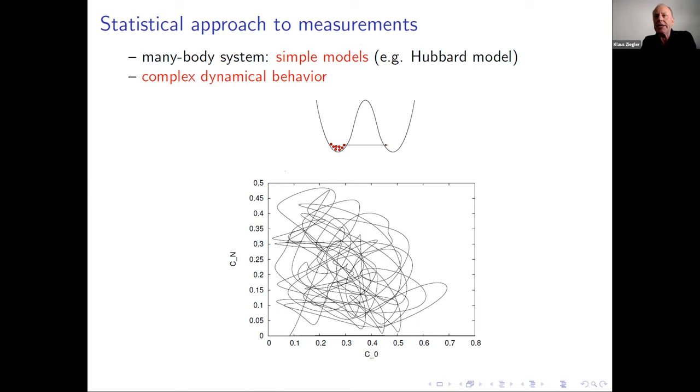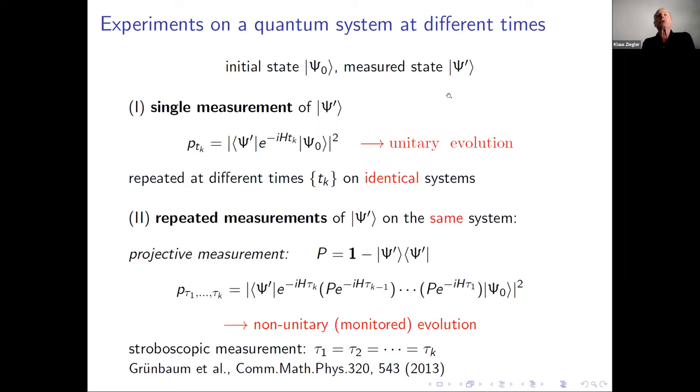The idea is we do measurements. We start with initial state ψ_0 and a state which we measure ψ'. The simplest way to do a measurement is to prepare the system in ψ_0, let the system evolve, and then measure at time t_k the probability that the system is in this state ψ' which we want to discover. This measurement is based on unitary evolution. We can repeat this measurement with identical systems at different times t_k, and these times can be random.